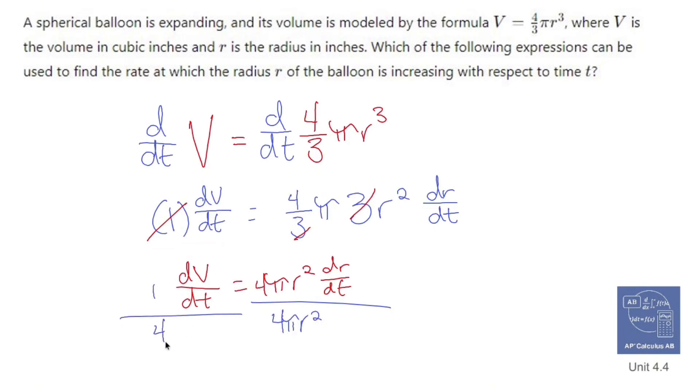I'm going to put a 1 here, 4 pi r squared, even though I erased the one just a second ago. And I'm going to rewrite it like this. dr/dt is going to equal 1 over 4 pi r squared dV/dt. And that's the formula that we can use for dr/dt. Fun stuff, related rates.